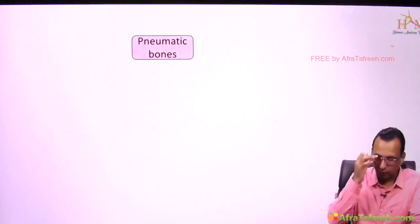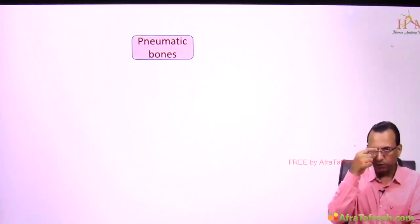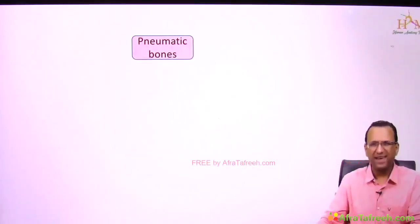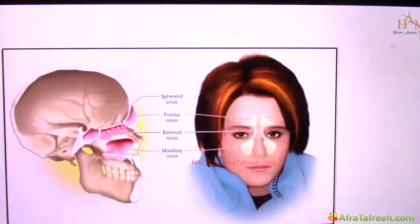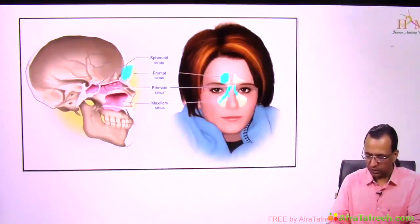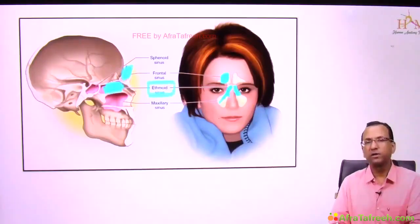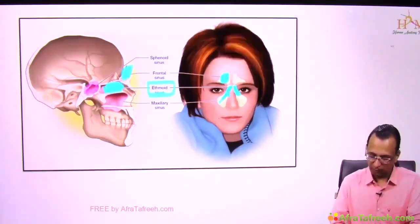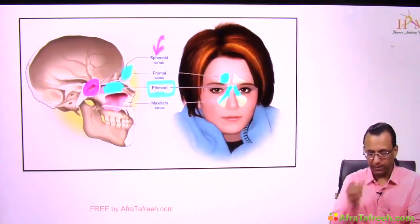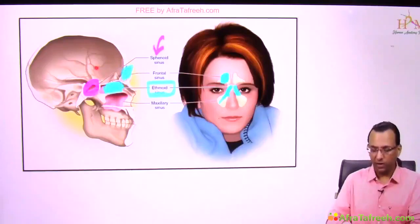Now, regarding pneumatic bones: a skull X-ray question may ask you to identify a sinus. There is a frontal sinus in the frontal bone, an ethmoid sinus in the ethmoid bone (the nose bone), and behind the ethmoid is the sphenoid bone with the sphenoid sinus. The sphenoid is a pneumatic bone — it is where the pituitary gland is housed — and it has sphenoid air sinuses.